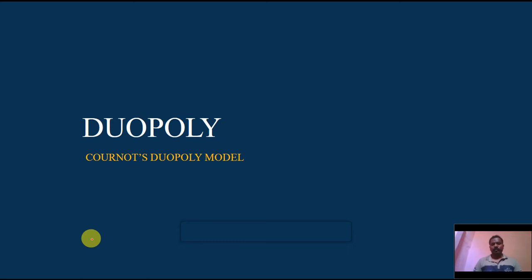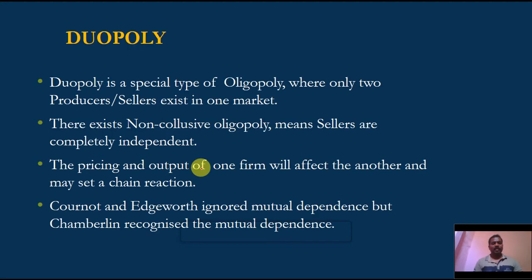Welcome. Today we're going to discuss the Cournot duopoly model — this is very important and easy to understand. A duopoly model is a special type of oligopoly. Oligopoly means a few-sellers market with many buyers. Duopoly is a special type of oligopoly where only two producers or sellers exist in the market.